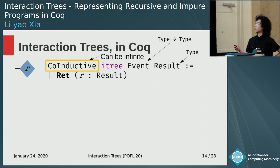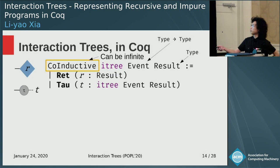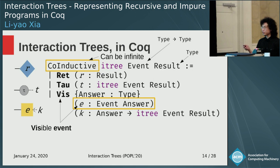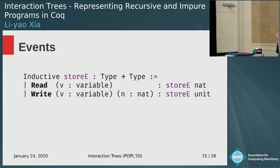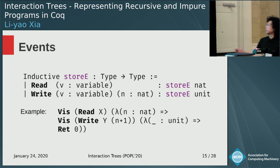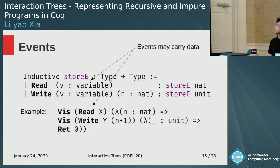There is one constructor for the result — the leaves of the tree. There are tau nodes that are silent steps of computation followed by only one child. And there are vis nodes that contain a visible event, parameterized by an answer type that is taken by the continuation. Here is an example of a simple event for a little store effect, where you can read and write from variables. This is a small interaction tree written in Coq using these effects.